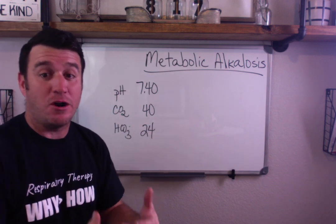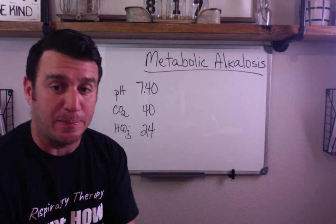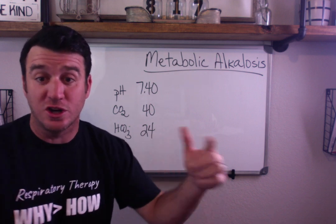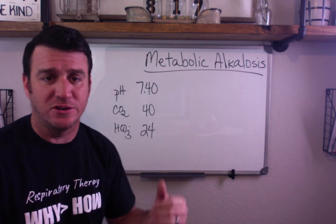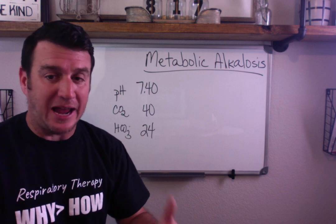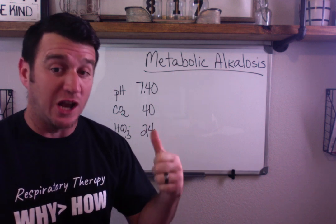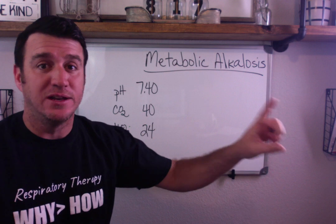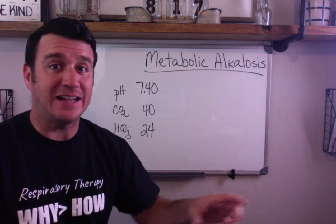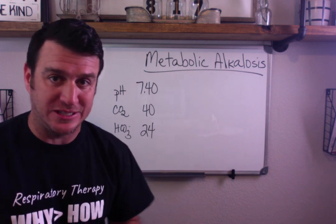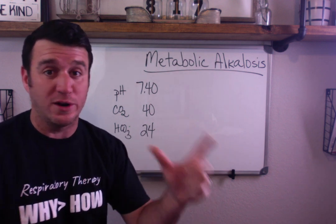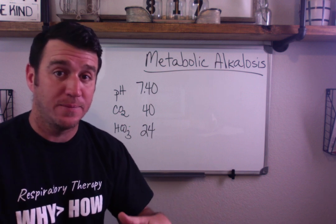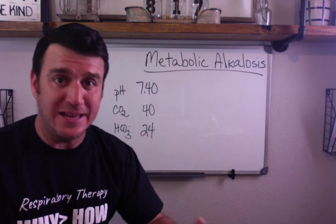What happens with metabolic alkalosis is the exact opposite of metabolic acidosis. If you remember in the metabolic acidosis video, the problem is either that you've lost your supply of bicarb or you have gained non-volatile acids. The exact opposite is true with metabolic alkalosis: either you've lost non-volatile acids, or you have gained bicarb.